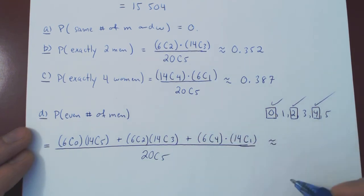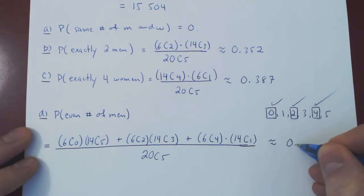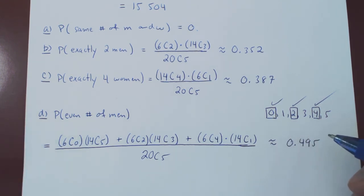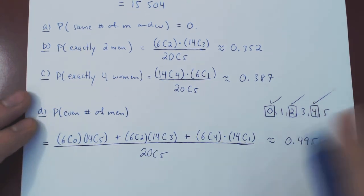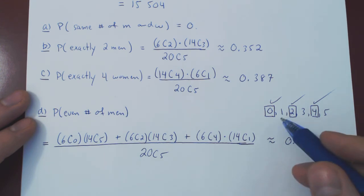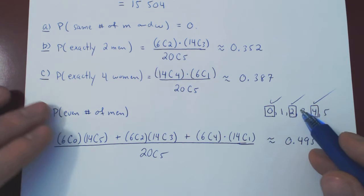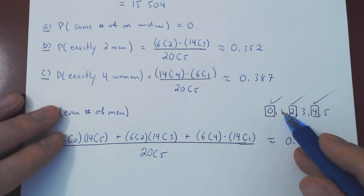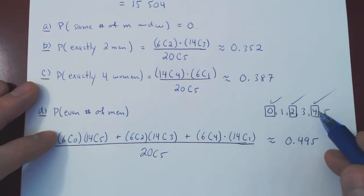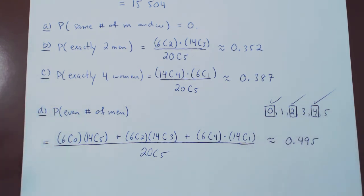If you compute this with your calculator, you will find the approximate answer of 0.495. This was quite a bit of work. It was useless to think of the complement rule here, because if you look at the complement, that's also 3 different events — the same amount of work. So the complement rule would not have given us a slicker solution in this case.